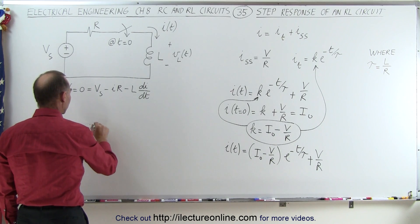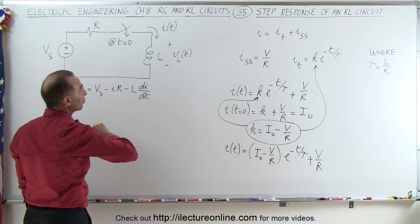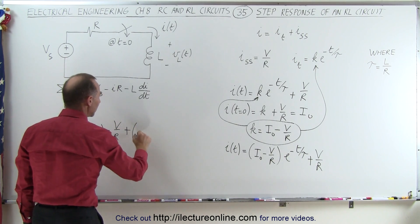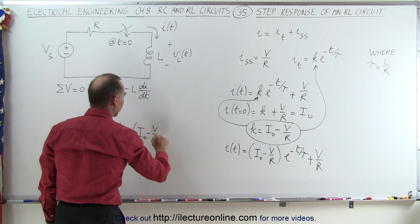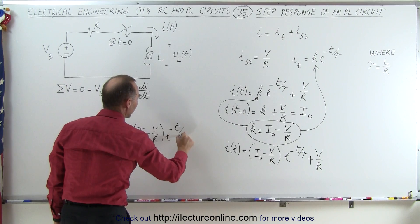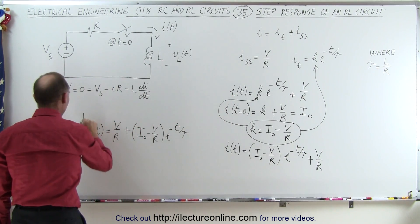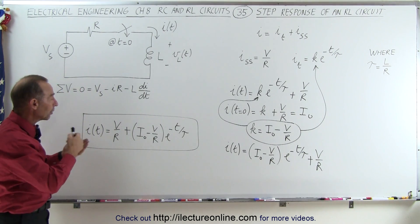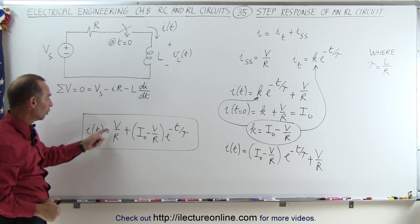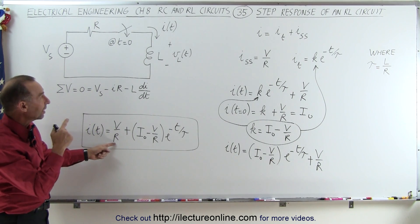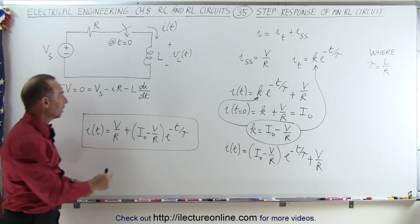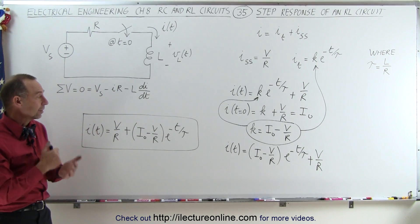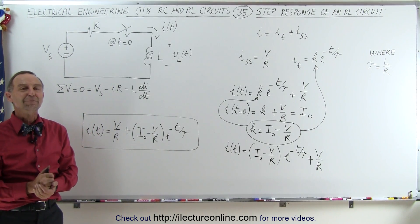We can then say that the current, as a function of time in an RL circuit, is going to be equal to V over R, plus the quantity, the initial current minus V over R, times e to the minus t over tau, where tau is, of course, the time constant of an LR circuit. And this then becomes the equation we're going to be using to solve RL circuits, resistor-inductor circuits. Notice that V over R would be the steady-state current, and then we have plus the initial current minus the steady-state current, times e to the minus t over tau. That will give you the current in an LR circuit at any point in time. And that's how it's done.